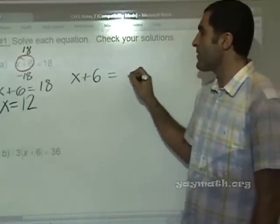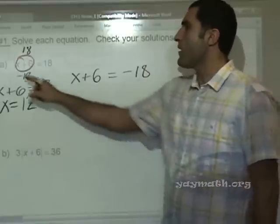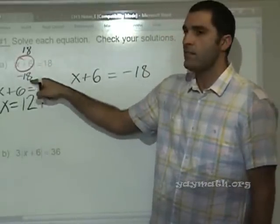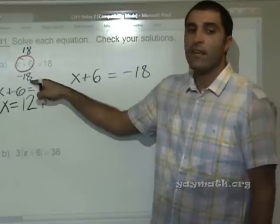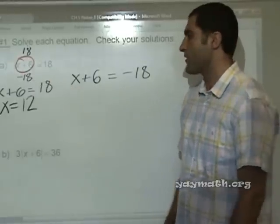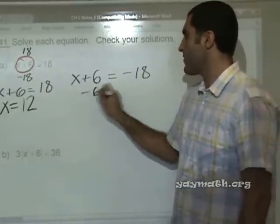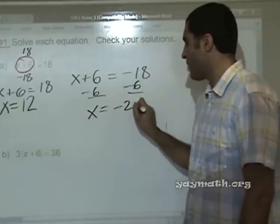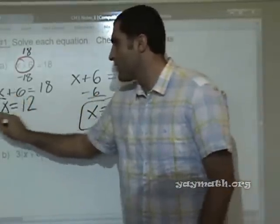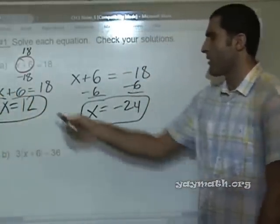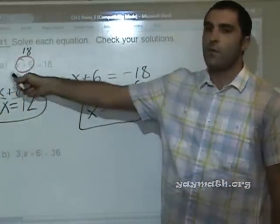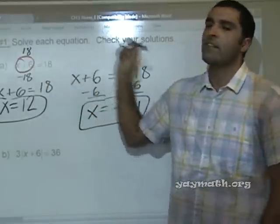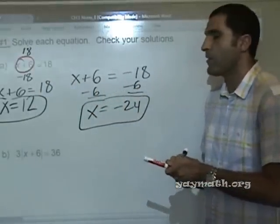Or, x plus 6 can result in negative 18, because that would be the absolute value of negative 18. And what's the absolute value of negative 18? 18. So, that works. So, we can solve this by subtracting 6 on both sides. And we have x equals negative 24. We can check them both. We already checked the 12. If we check negative 24 in here, plus 6 is negative 18. Absolute value of negative 18 is 18. Okay. Any questions on that one?